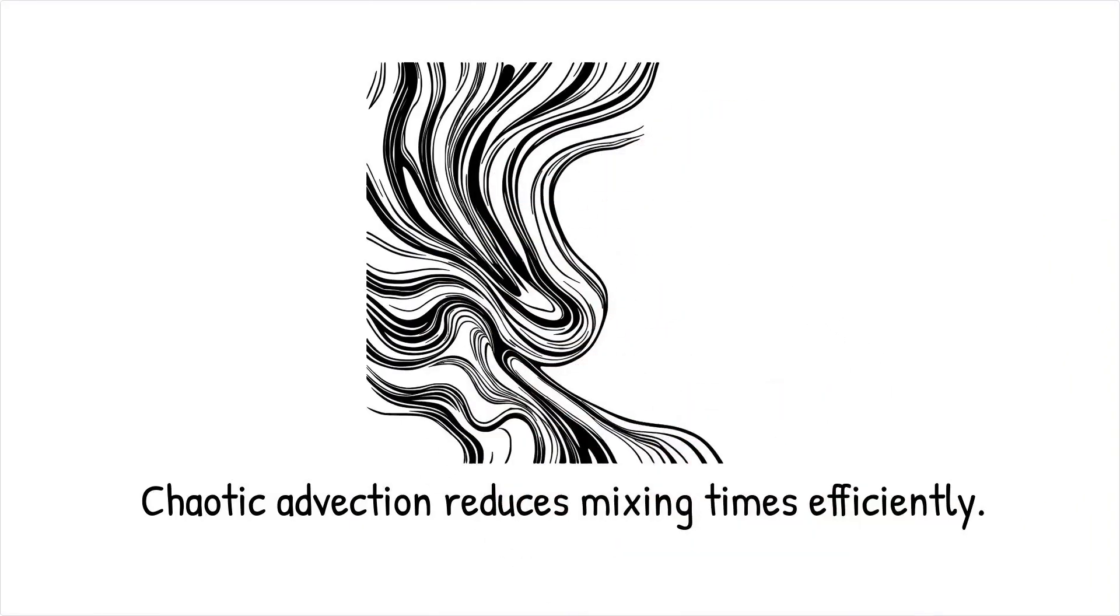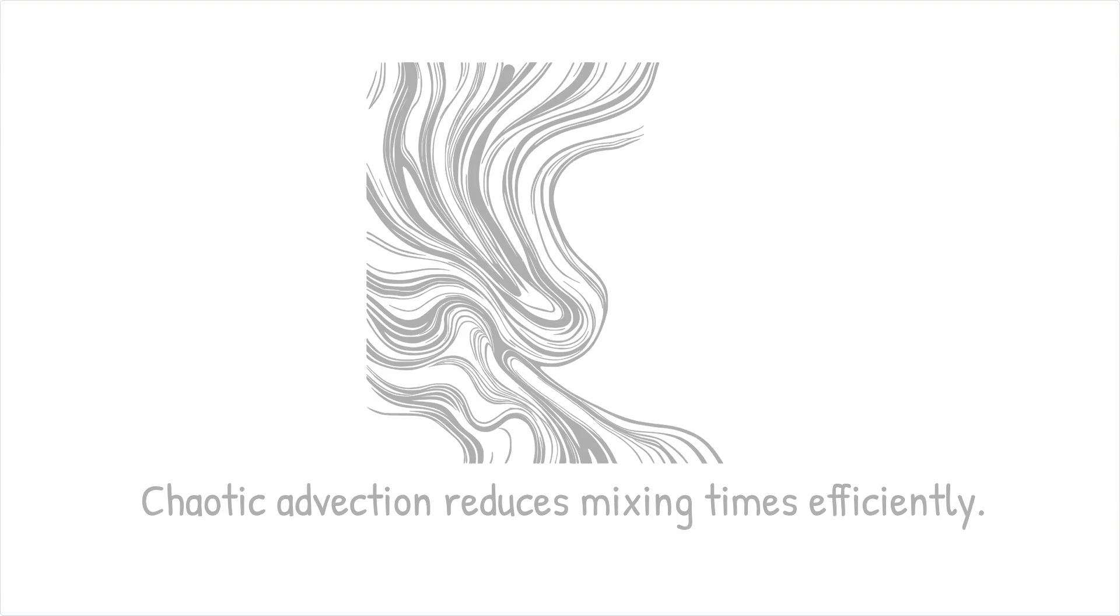DNA hybridization assays use chaotic advection to enhance molecular interaction rates in genetic analysis chips. Chaotic advection is like scrambling an egg - constant movement breaks and mixes components efficiently.